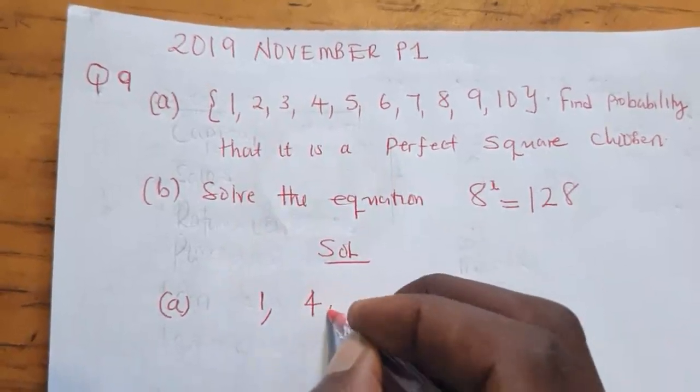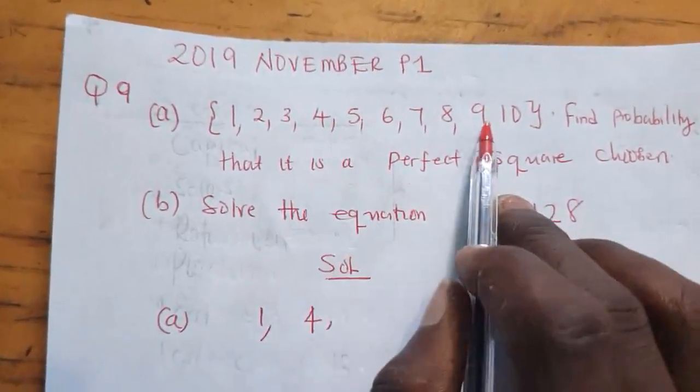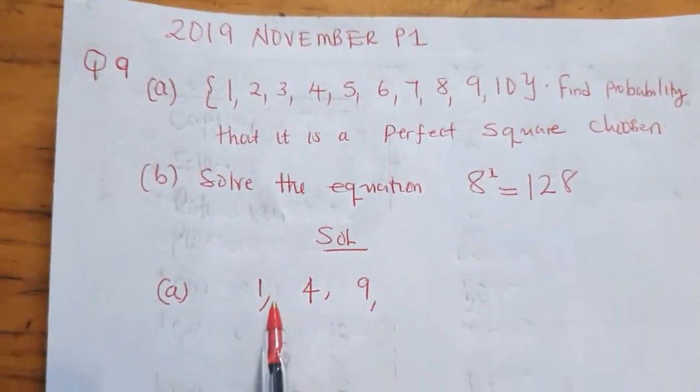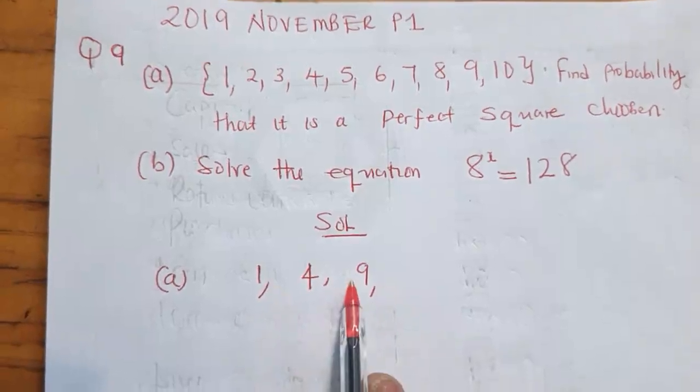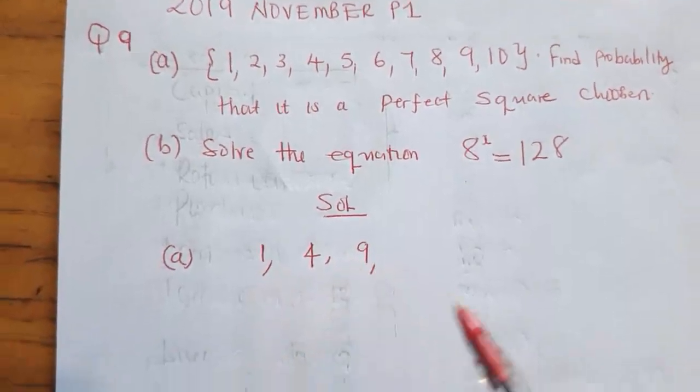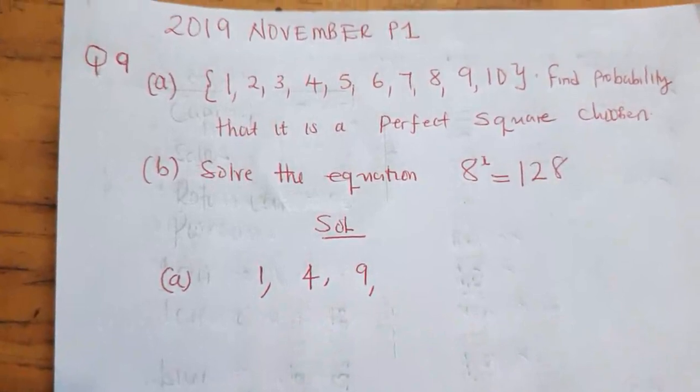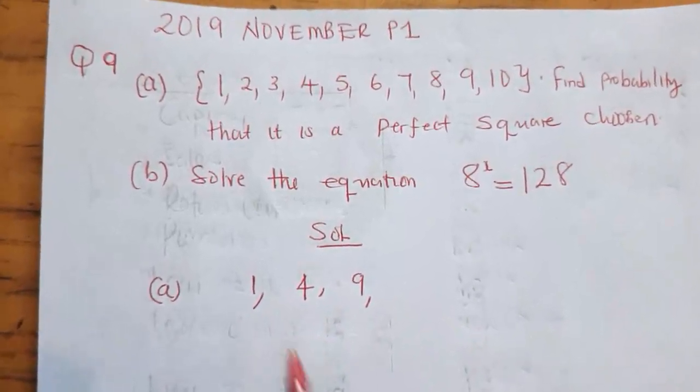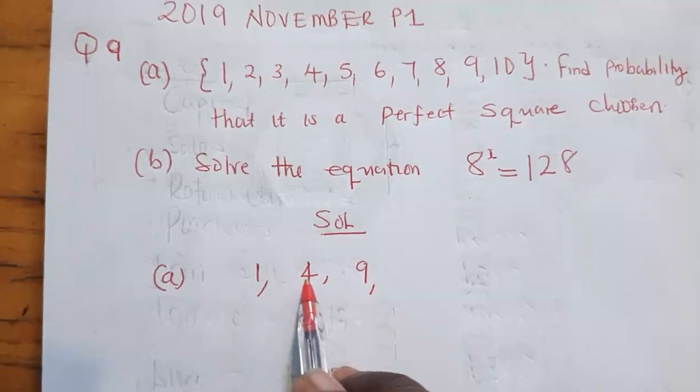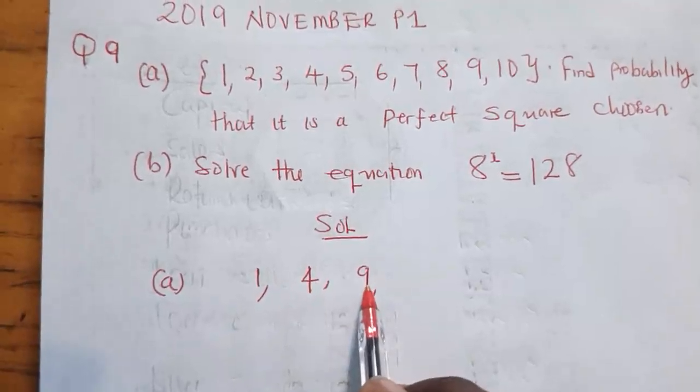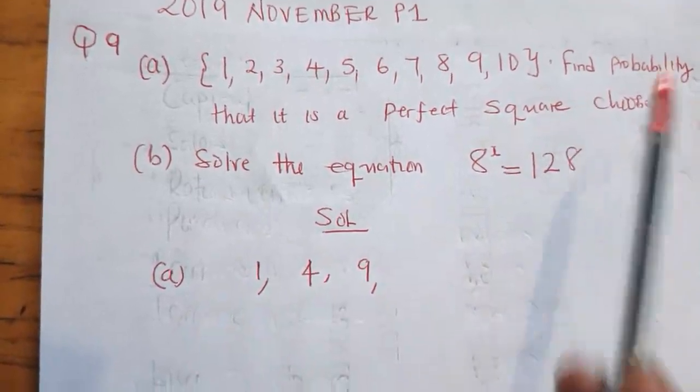So 4 is there. What else? 9 is there. These are the perfect squares. Numbers that you can only get after you square a certain number. For example, 1 squared is 1, 2 squared is 4, 3 squared is 9. We don't have 4 squared, which gives us 16.